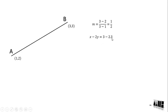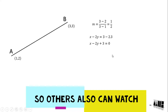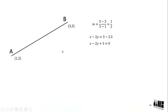Now we have the point (3, 3): x minus 2y plus 3 equal to 0. Here, the value of x is x1 and y is y1. We can set it to the value of x1, y1. So this is the value of x1, y1, and we can set it up as a over b.